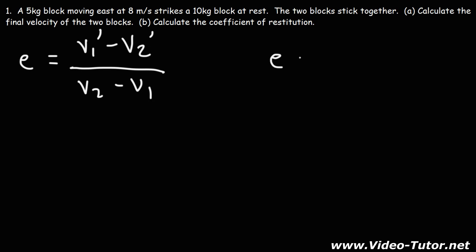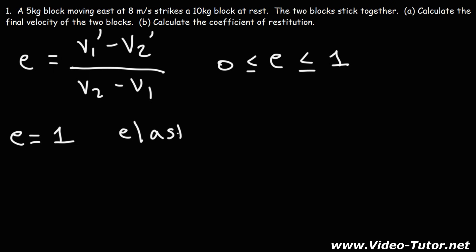The coefficient of restitution is a number between 0 and 1. When the coefficient of restitution equals 1, you're dealing with a perfectly elastic collision. For all collisions, momentum is conserved. But for an elastic collision, the kinetic energy is conserved — so there's no loss of kinetic energy for these types of collisions.